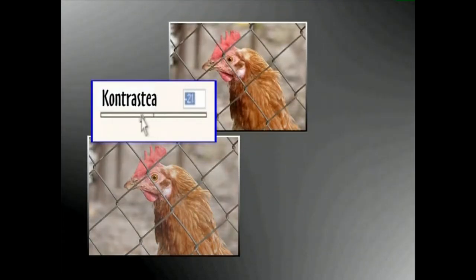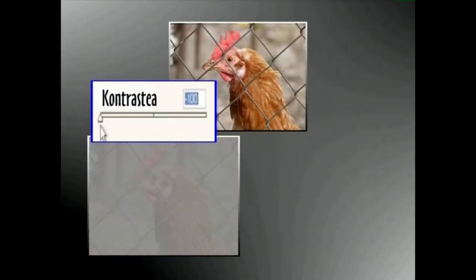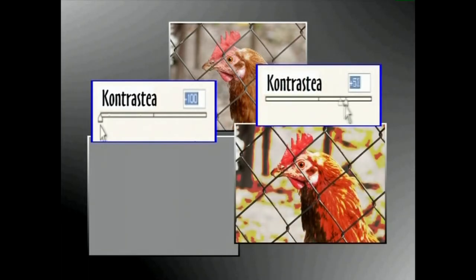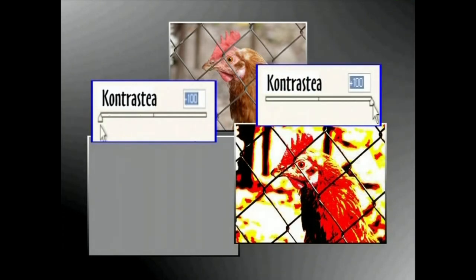Irudi baten kontrastearen parametroak aldatuz gero, haren erdiko tonuen eta tonu hilunen artean dauden puntu guztien diztira haundituko edo txikituko dugu.